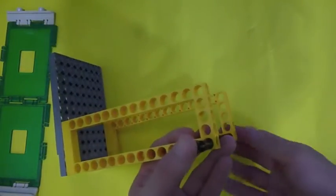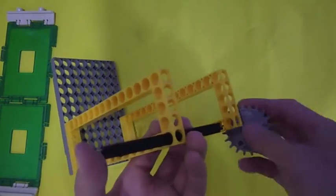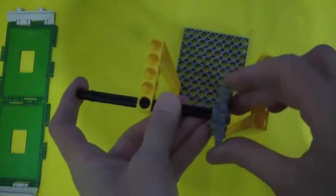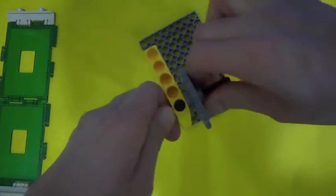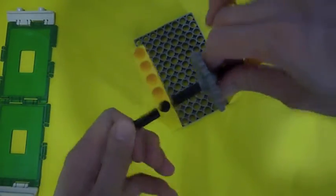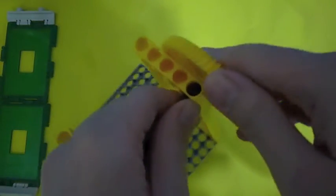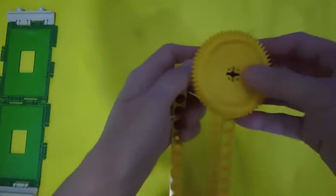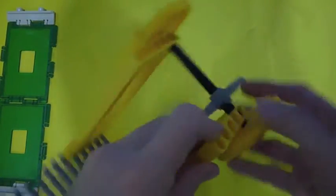Next, we would connect the wheels. First, let's insert the gear so that the car can move. Let's put the wheel. Also do it on the other side.